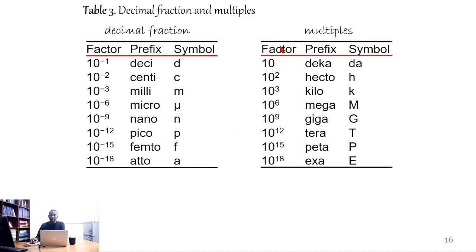Correspondently, the factor for multiples: 10¹ prefix deca, symbol da. 10² hecto, h. 10³ kilo, k. 10⁶ mega, capital M. 10⁹ giga, capital G. 10¹² tera, capital T. 10¹⁵ peta, capital P. And 10¹⁸ exa, capital E.